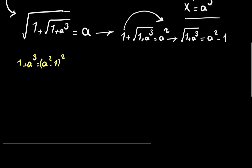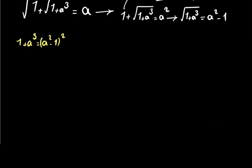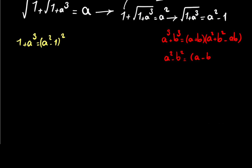To continue, you need to know some really nice identities. If you have a cubed plus b cubed, you can write it as a plus b times a squared plus b squared minus a times b. And of course, if you have a squared minus b squared, you can write it as a minus b times a plus b.